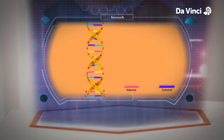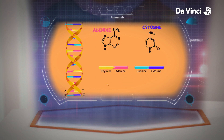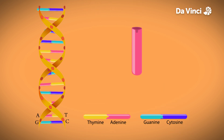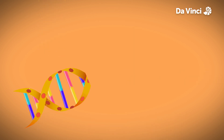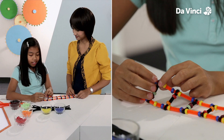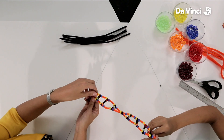DNA bases pair up with each other — A with T and C with G — to form units called base pairs. A, C, T, and G stand for adenine, cytosine, thymine, and guanine. Each base is also attached to a sugar molecule and a phosphate molecule. Together, a base, sugar, and phosphate are called a nucleotide. Nucleotides are arranged in two long strands that form a spiral called the double helix. And there we have it — that's our double helix DNA strand.